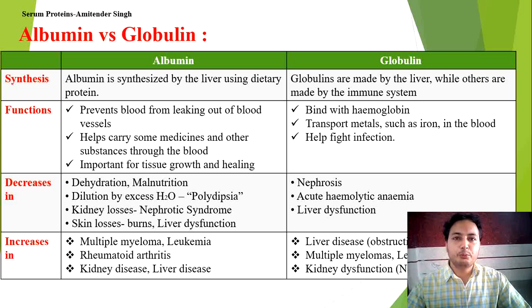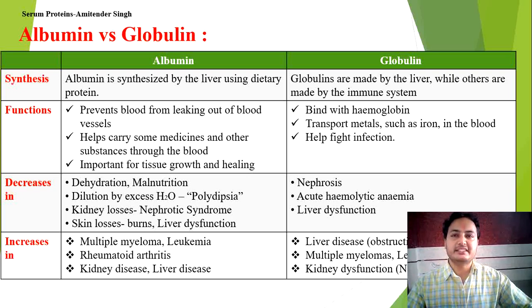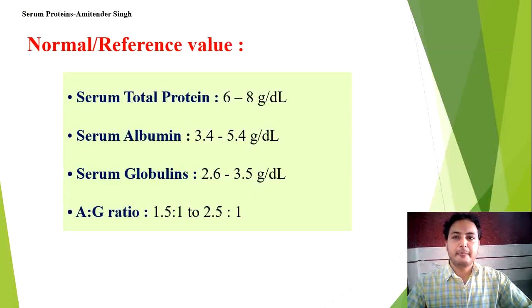Similarly, globulin also increases in liver disease, obstructive jaundice — when the bile duct becomes obstructed or blocked — multiple myeloma, leukemia, or kidney dysfunction such as nephrosis. In these conditions, globulin values are elevated.